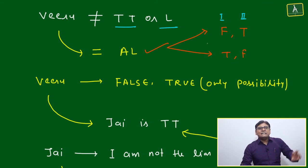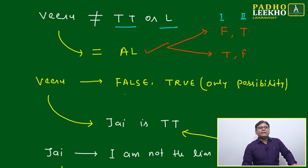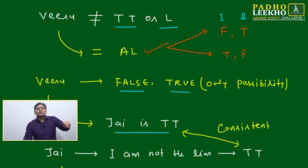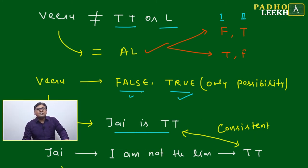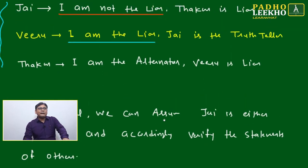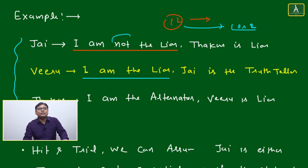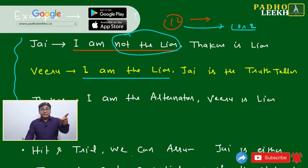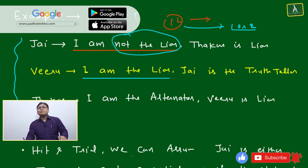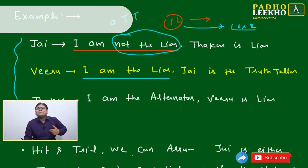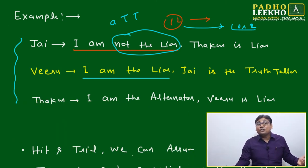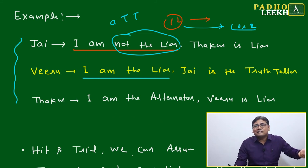If Viru's pattern is false-true, then the first statement is false and the second is true — meaning 'Jay is the truth teller' is correct. Now let's match with Jay's statements. Jay says 'I am not the liar,' meaning 'I am a truth teller.' If he is a truth teller saying 'I am a truth teller,' that is 100% consistent.